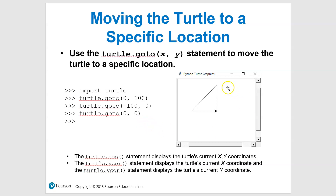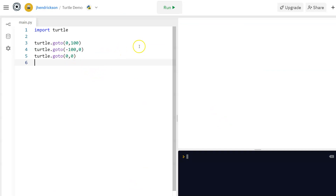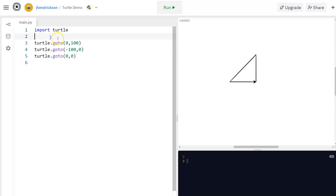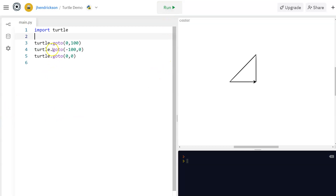As an example, we started at (0, 0), went forward to (0, 100), then went to (-100, 0) bringing us back down, then goto (0, 0) going right back to the start. When I hit run, boom — there we go. Use goto — it's awesome, super precise, and easy.